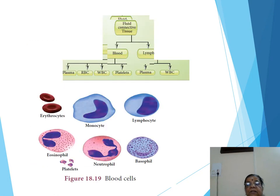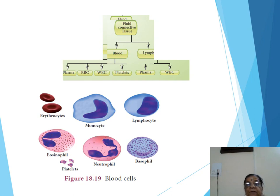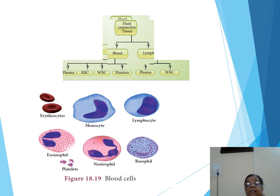Next we are going to learn about blood tissue, which comes under fluid connective tissue. Fluid connective tissue is of two types: blood and lymph. Blood is circulated within blood vessels, whereas lymph is circulated within the lymphatic system — another circulation present in the human body.